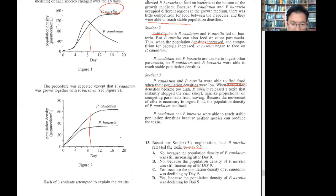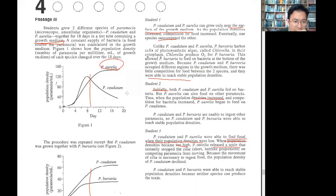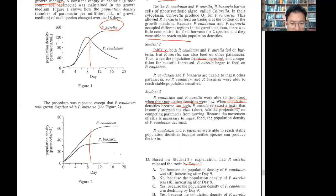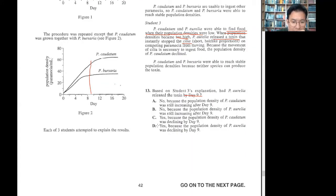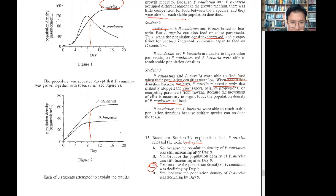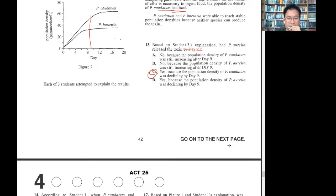Based on student three's explanation, day nine. It says when population density became too high, release toxin. So population is really high, it's almost like 100% density. So then it released toxin. Population density was declining.